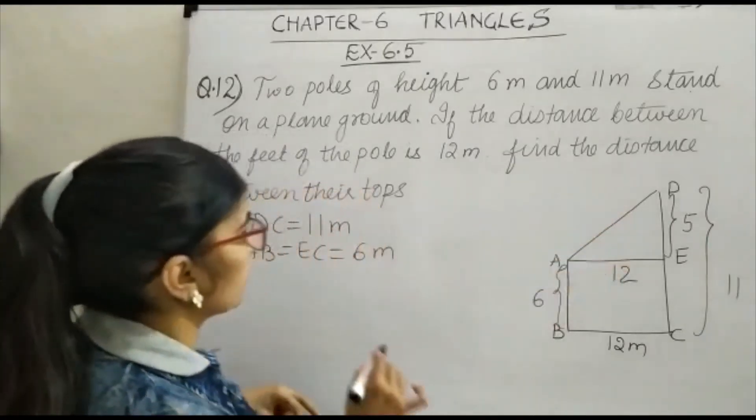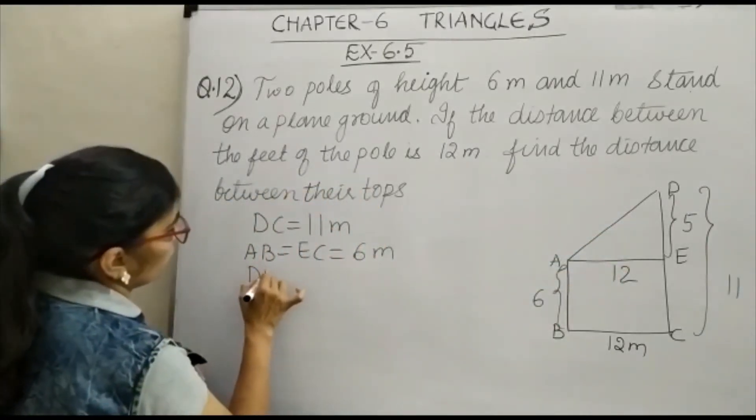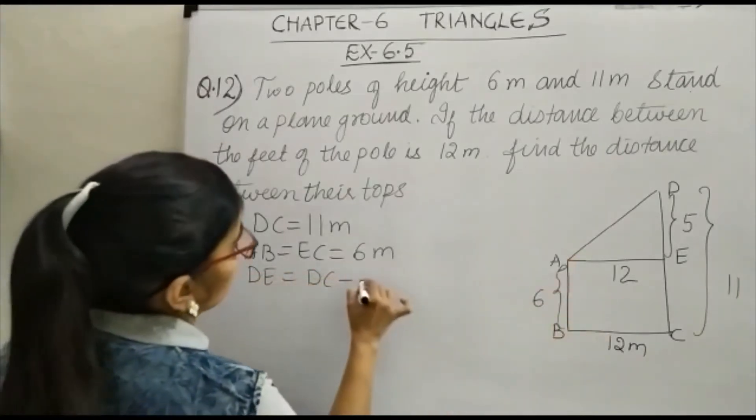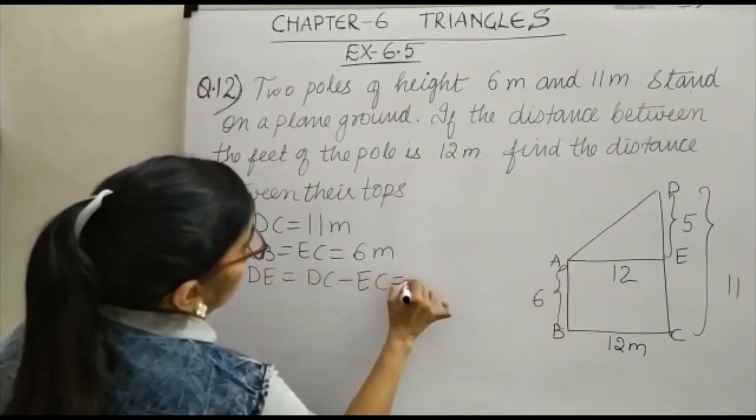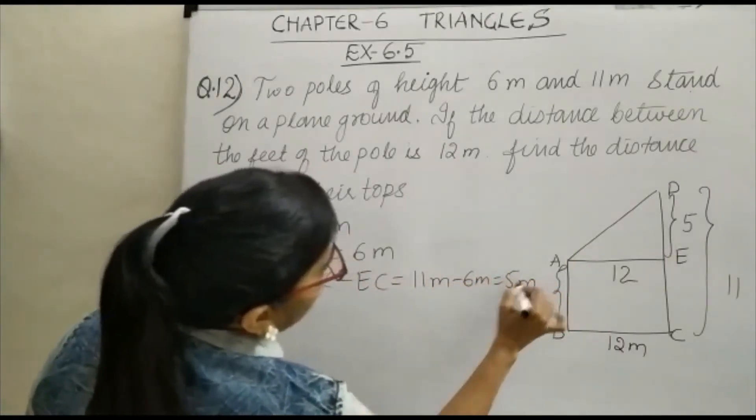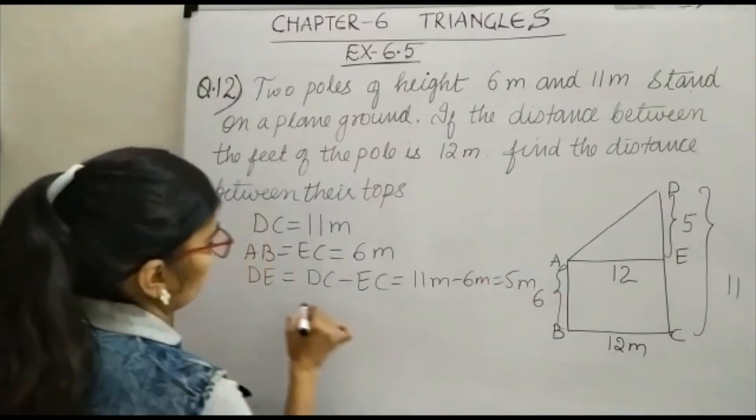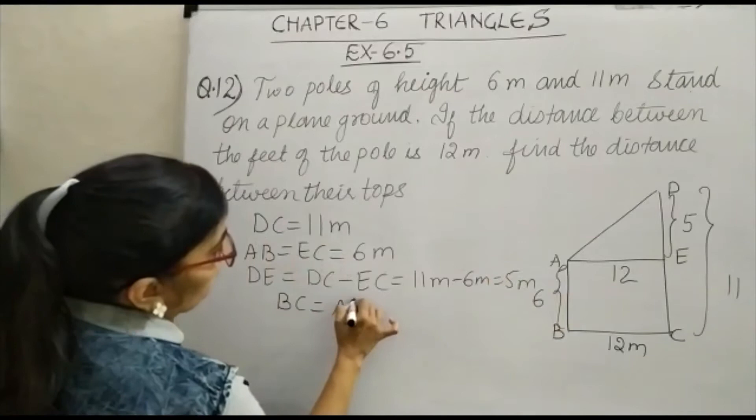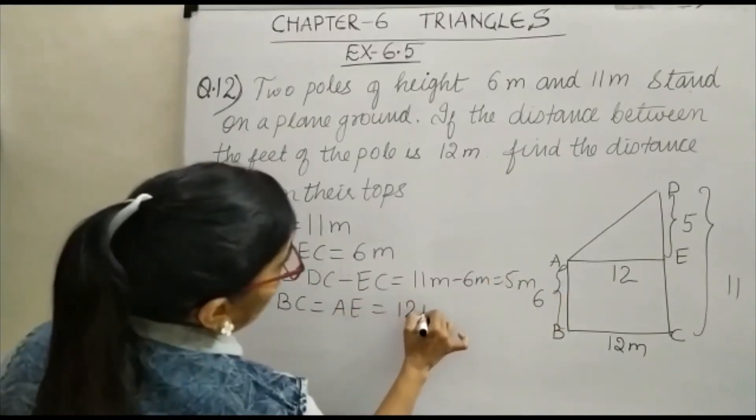So how do we get DE? DC minus EC, that is 11 meter minus 6 meter, that is 5 meter. Now your BC is equal to AE is equal to 12 meter.